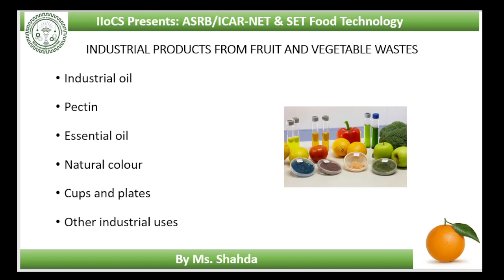Industrial products from fruit and vegetable wastes: apart from utilizing solid waste for preparation of food products, it could also be used for industrial products. Industrial oil: cashew shell contains about 20% oil and resin, which can be used for insulation of electric wiring, brake lining and preparing foundry moulds and cores. In many countries, cashew shell is finding better use for food, feed, fuel and industrial products than the cashew nuts themselves. Other sources of sweet and bitter oil are the waste of wild apricots, peach kernels, citrus seeds and tomato seeds, used in cosmetics, pharmaceuticals and after refining in food items.